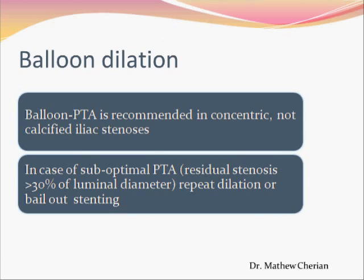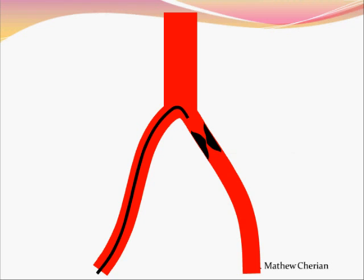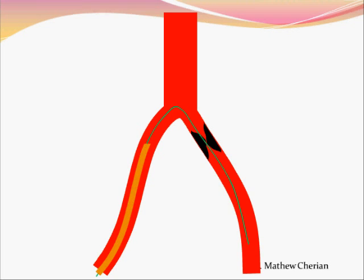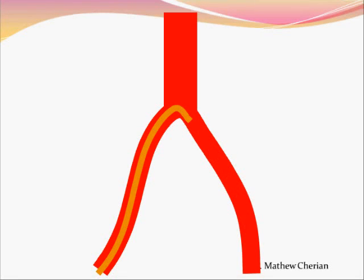A Category 1 lesion is ideally treated by plain balloon angioplasty. Stenting is performed only if the results of plain balloon angioplasty are not acceptable. The technique involves taking a catheter from the opposite side to perform the angiogram, navigating a wire across the stenosis, then using a crossover sheath or guiding catheter to allow test injections and extra support. A balloon is then taken across, dilated, deflated, and if test injections show good results, the wire is pulled out.